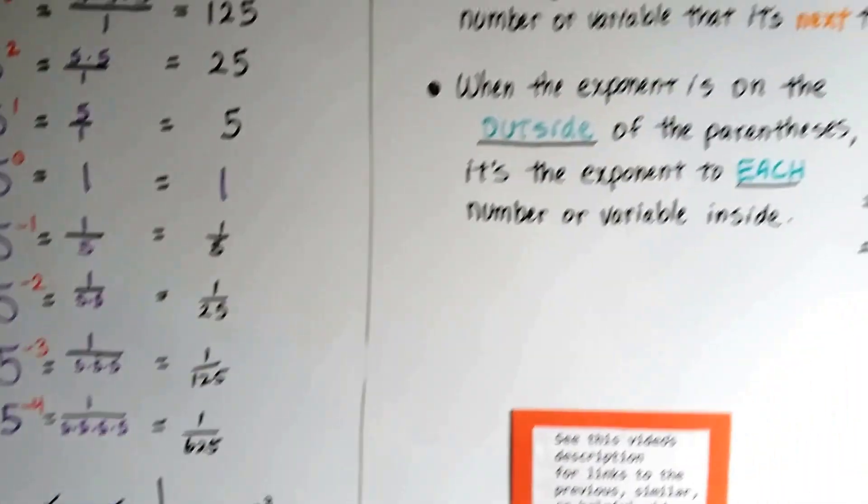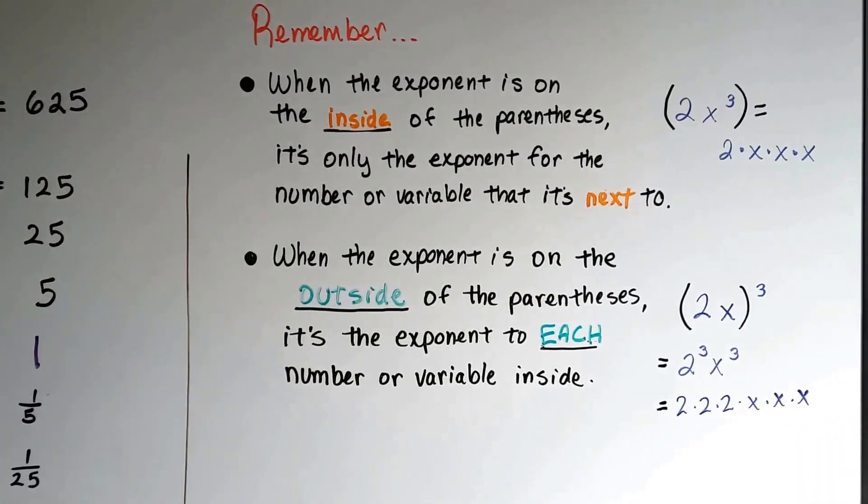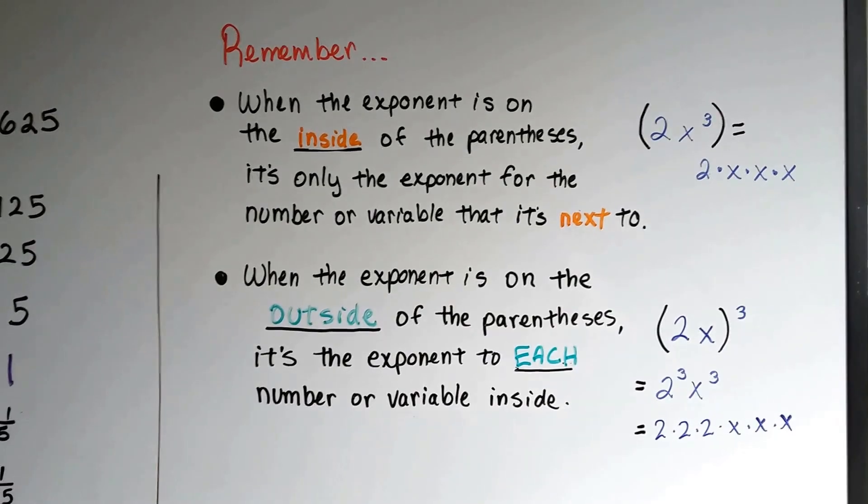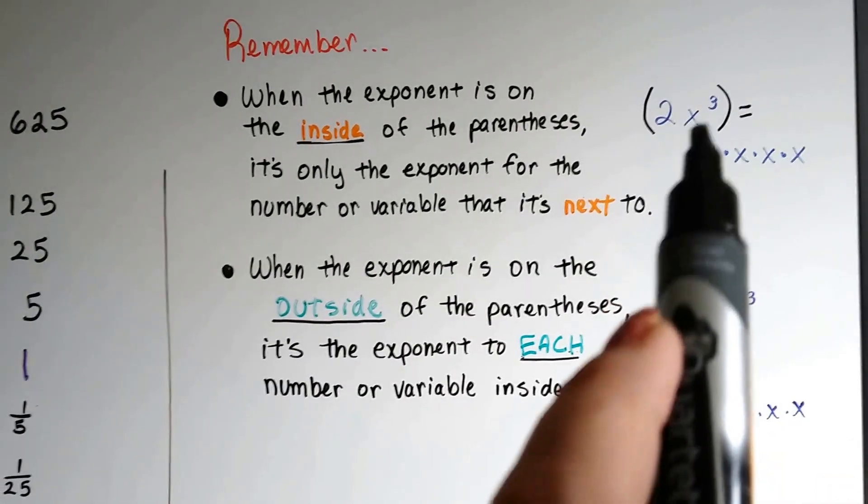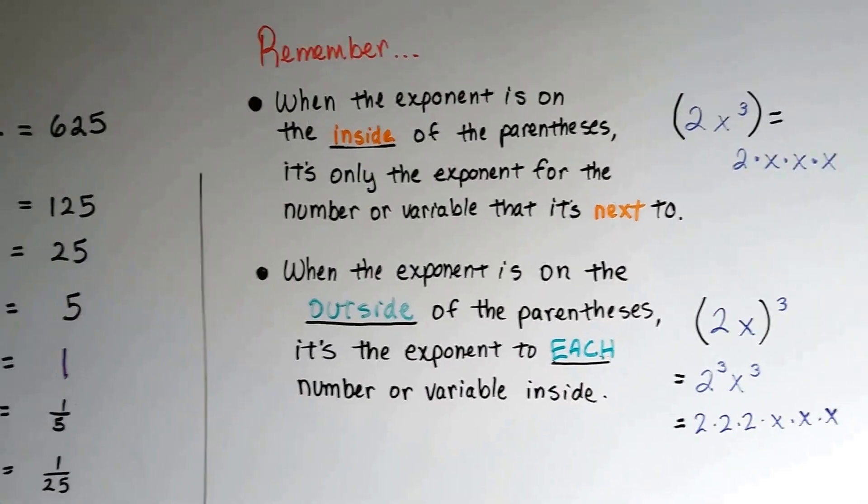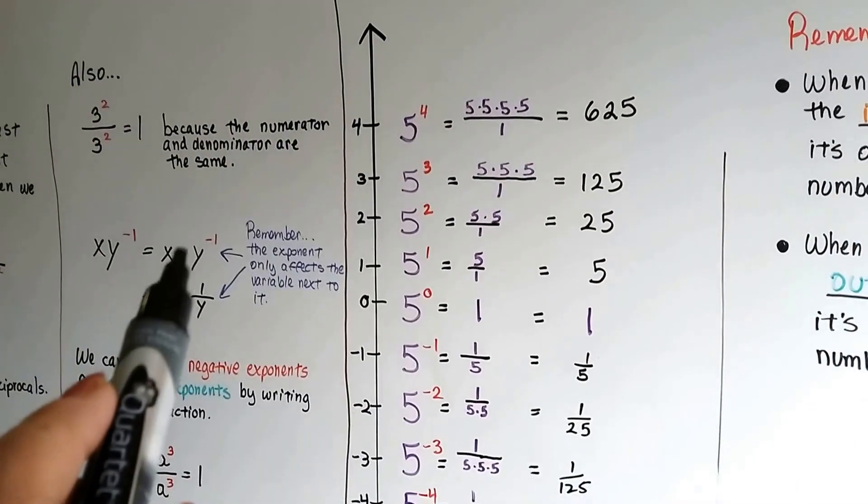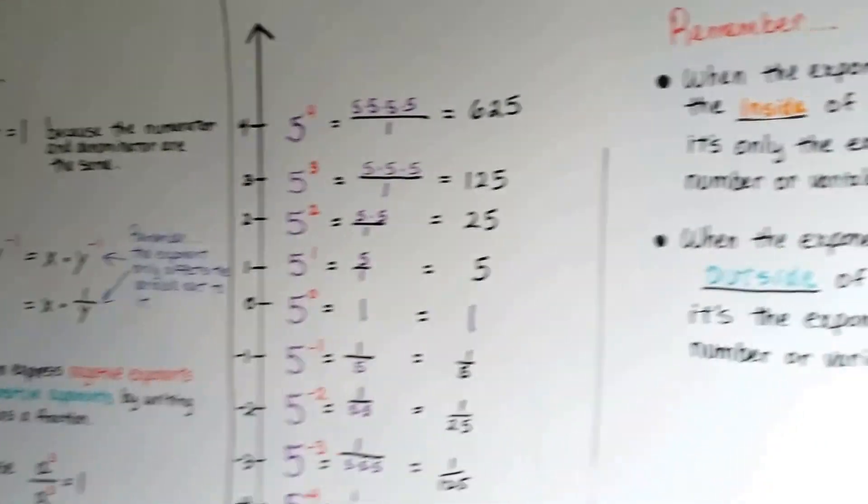I know I mentioned this before, but I'm really trying to drill it in your head. I want you to remember that when the exponent is on the inside of the parentheses like this, it only affects the variable that it's next to. Even if it's not in parentheses, it affects only the variable it's next to.